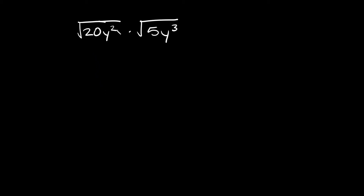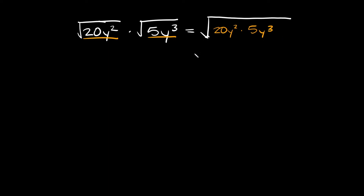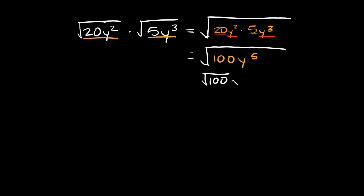Here we have the square root of 20y squared times the square root of 5y cubed. The first step is combining everything under one big radical: 20y squared times 5y cubed. Now simplify by combining like terms. 20 times 5 equals 100, and y squared times y cubed equals y to the fifth power. Now take the square root of each part individually: the square root of 100 times the square root of y to the fifth. The square root of 100 is a perfect square — it's just equal to 10.